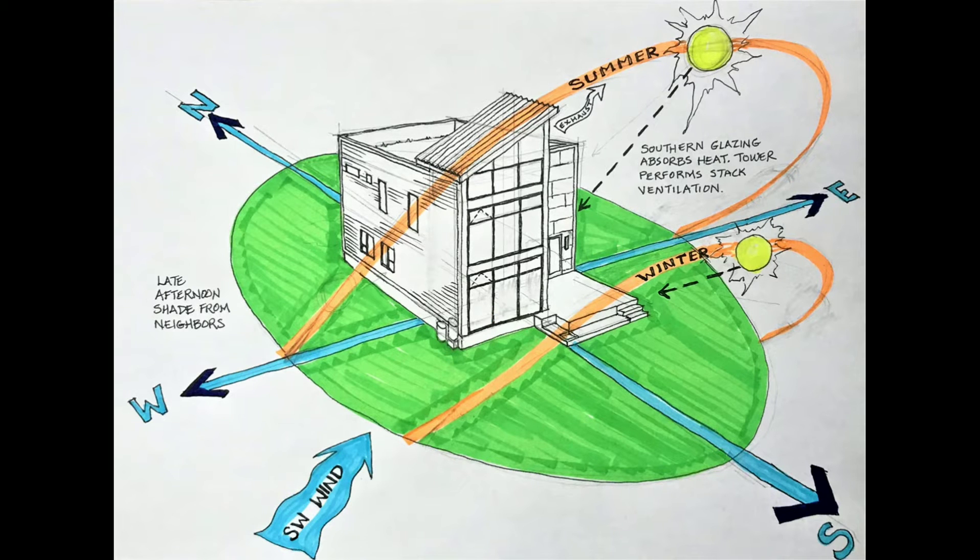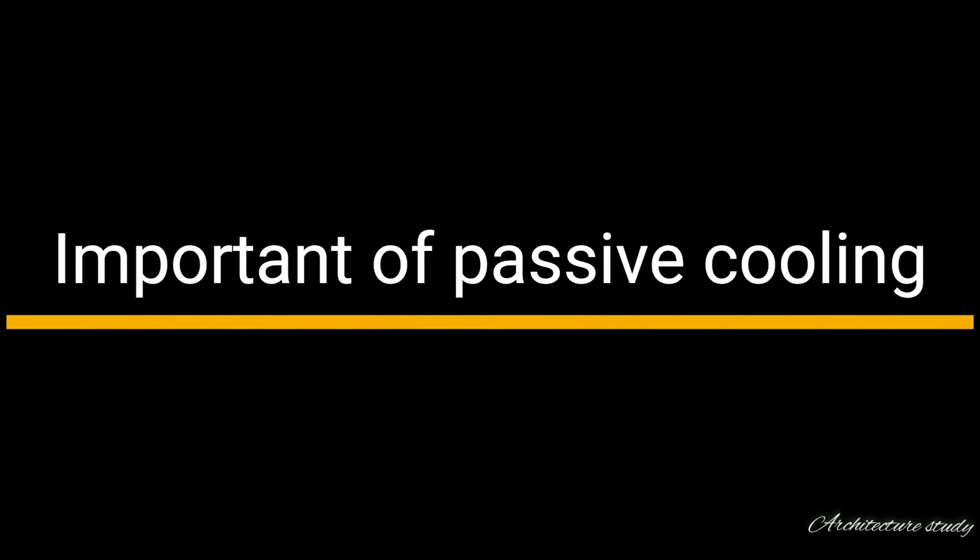Passive cooling is a method of cooling a system or space without the use of active mechanical systems, such as air conditioners or fans. Instead, it relies on natural processes, design strategies, and materials to dissipate heat and maintain a comfortable temperature. The goal is to enhance the natural flow of heat, allowing it to move away from a space or system, thereby reducing the need for external energy sources.